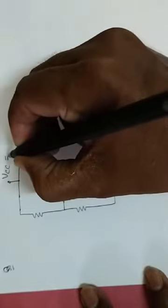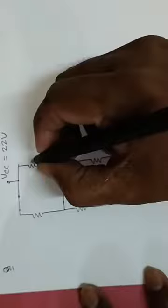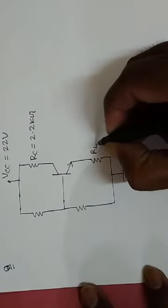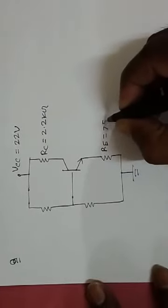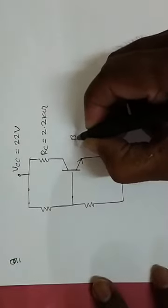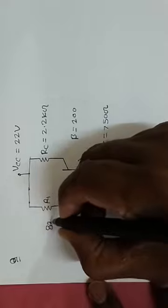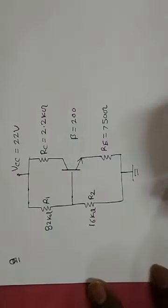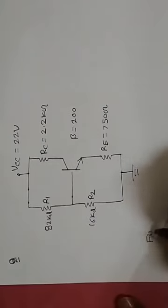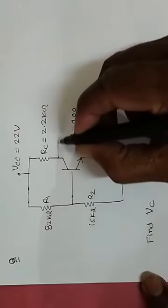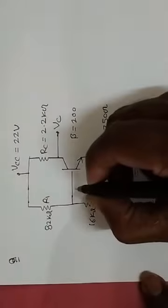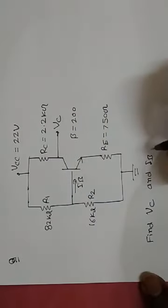इस circuit में: VCC = 22V, RC = 2.2 kΩ, RE = 750 Ω, β = 200, R1 = 82 kΩ, R2 = 16 kΩ. इस question में हमें find करना है: VC (voltage at the collector) और IB (base current).